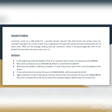Now let us consider an example. Here, customers arrive at a milk booth for a required service. Assume that the inter-arrival and service times are constant, given as 1.8 and 4 time units respectively. Simulate the system by hand computations for 14 time units. Find the average waiting time per customer and the percentage idle time of the facility, assuming the system starts at time t equal to 0.